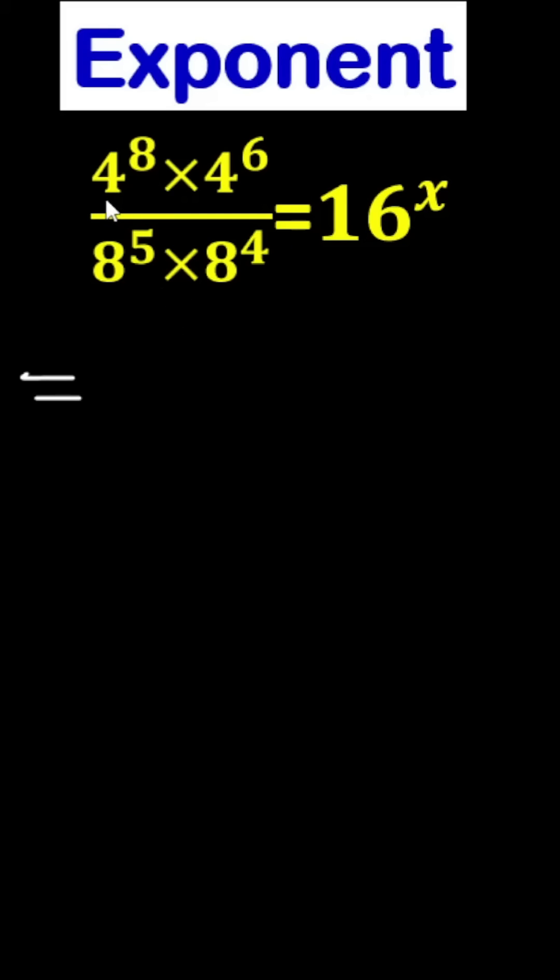4 to the power 8 times 4 to the power 6 divided by 8 to the power 5 times 8 to the power 4 equals 16 to the power x. We have to find out the value of x.